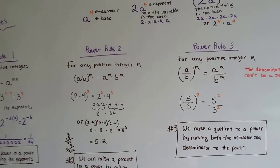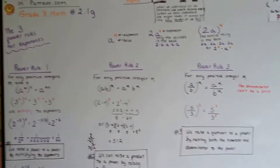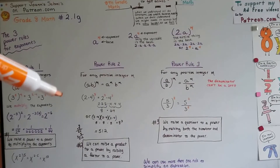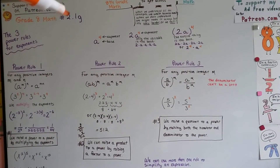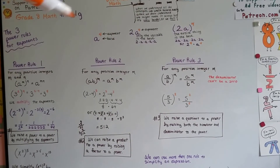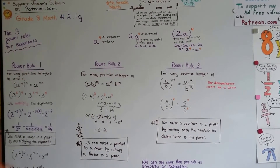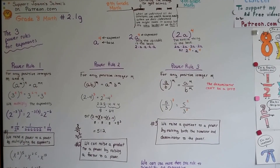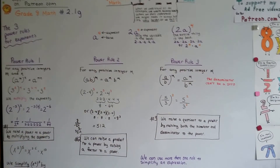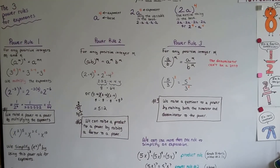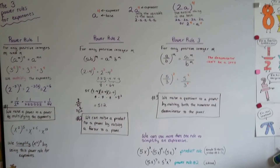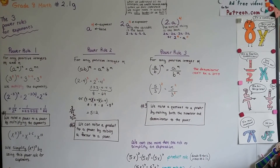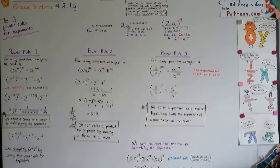So those are the 3 power rules for exponents. If you're not writing these down, go back and freeze frame each one so you can write down the rules. You want to write down all the rules from the full 2.1 series — we went all the way to g this time because there were so many rules. They should all be written down inside the cover of your spiral or someplace safe so you can look back at them quickly to help simplify things in the future. I'll see you next video. Bye.